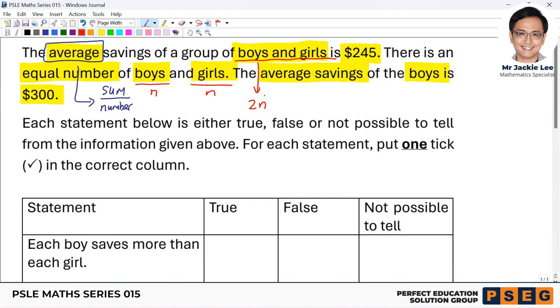Every saving for boys is $300. Then for the girls, perhaps, this one, let's say for the girls, we just simply say that this is $k.